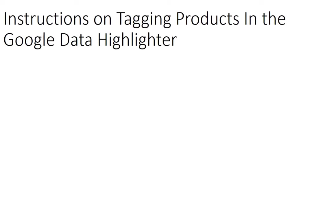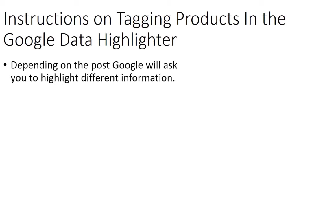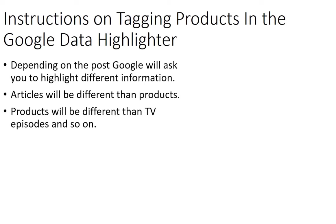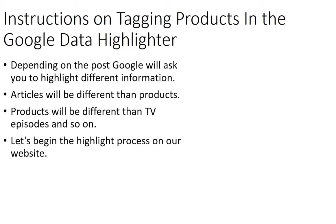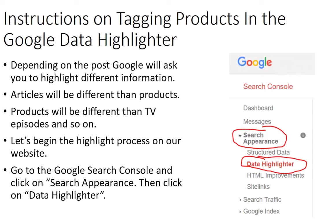Let's go over the instructions on tagging products in the Google Data Highlighter. Depending on the post type, Google will ask you to highlight different information. Articles will be different than products, products will be different than TV episodes, and so on. For instance, on products it asks for a price — there is no price on TV episodes. So let's begin the highlight process. Go to the Google Search Console, click on Search Appearance, and then underneath that you'll see a menu item called Data Highlighter — that's what you want to click on.